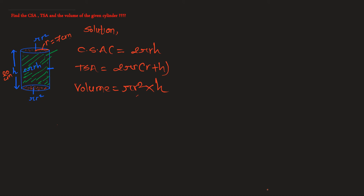Now let us see an example where we are given a cylinder of radius 7 centimeters and height 20 centimeters. First, the curved surface area is given by 2πrh. In the equation, we can replace π with 22/7, and r is 7 centimeters.